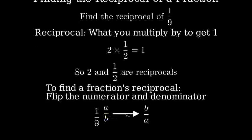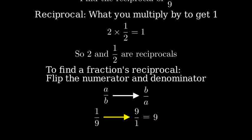Let's apply this to our problem. We start with one-ninth, which is one over nine. To find its reciprocal, we flip the numerator and denominator. So the reciprocal of one-ninth is nine over one, which simplifies to just nine.